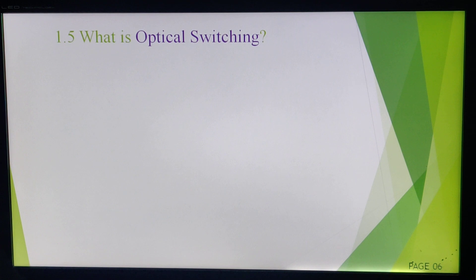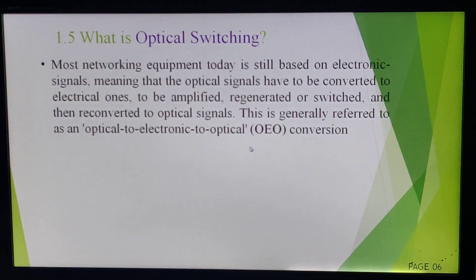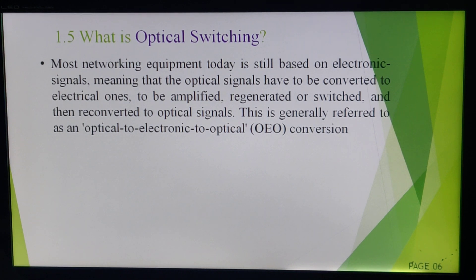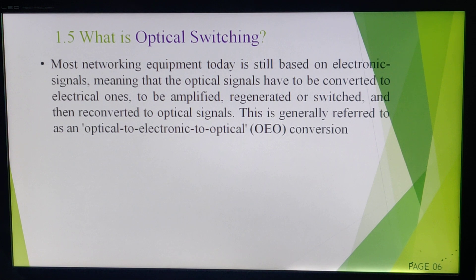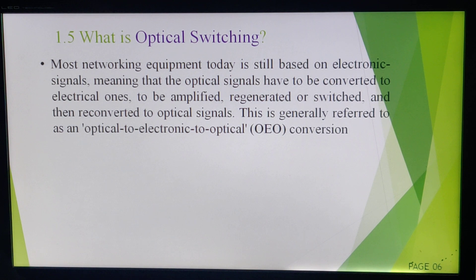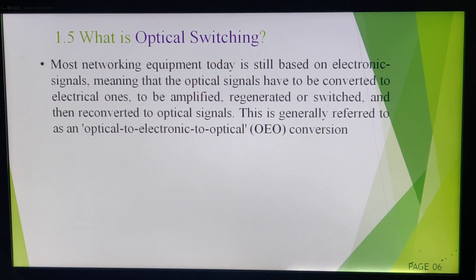Optical switching switches optical signals which are classified in terms of wavelength. We generally refer to this as optical to electronic to optical conversion, or OEO. The input signal is in the form of light — photons. The device first converts that optical signal into an electronic signal, then at the receiving side that electronic signal is transmitted and received. At the receiver side, the electronic signal is again converted to optical for final reception. That is known as OEO conversion.